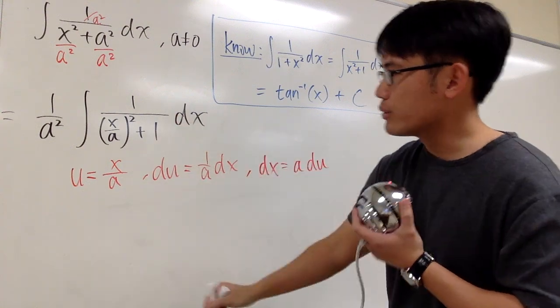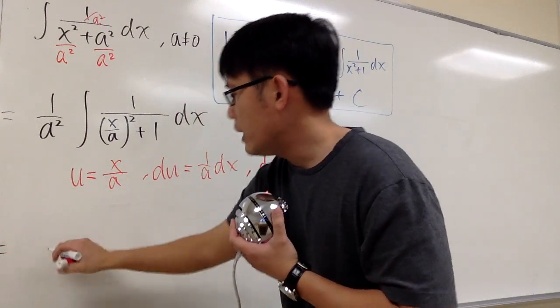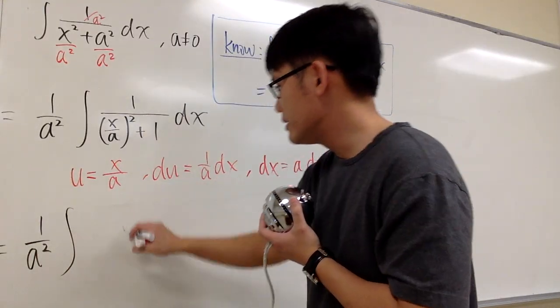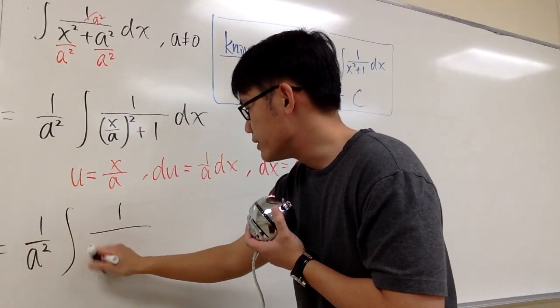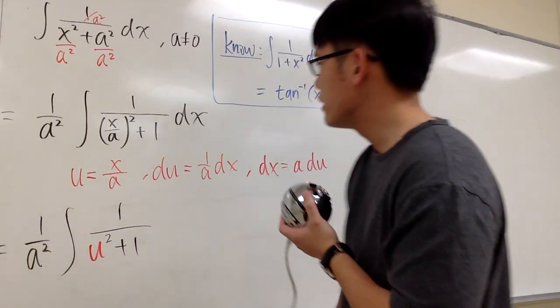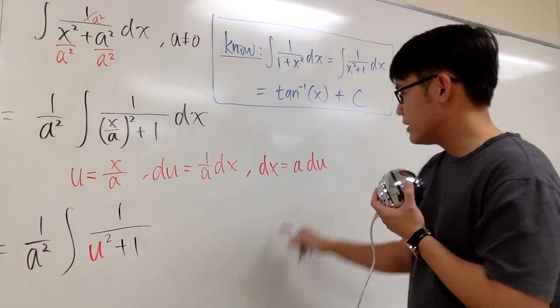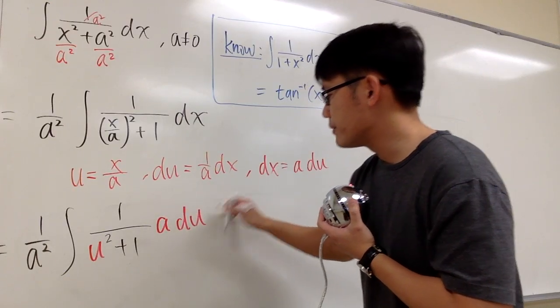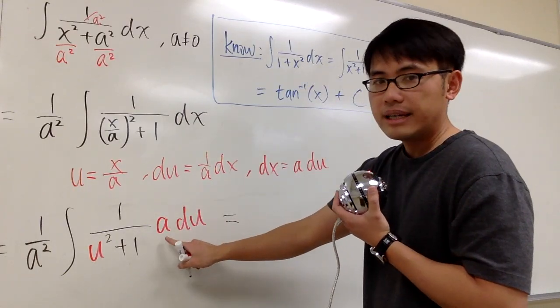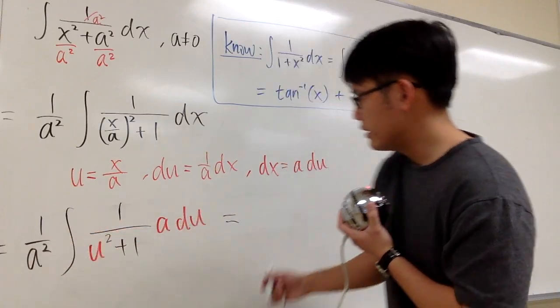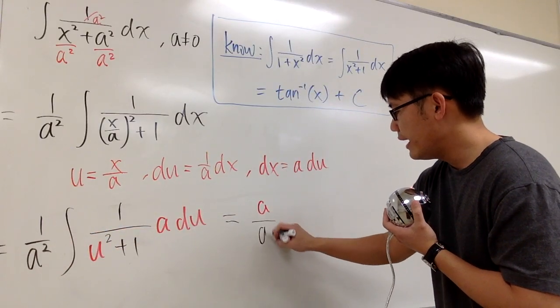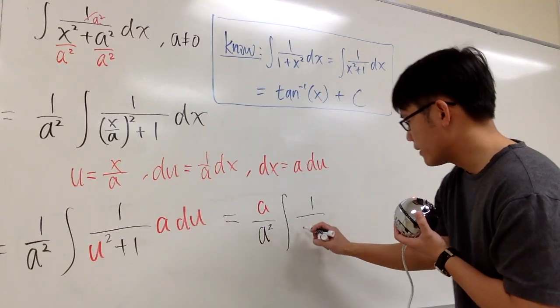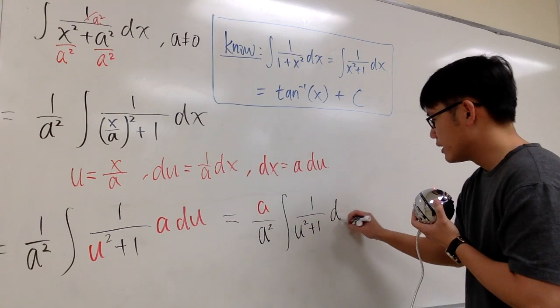And now let's take this into the u world to see what we get. We still have 1 over a squared in the front, and then integral, this is going to be 1 over x over a, which is u, and we have that squared, plus 1. And dx is a times du. So I write down a right here, and then we have du right here. And of course, a is a number. I can take this a to the front. So I'm talking about a over a squared, and then the integral of 1 over u squared plus 1, so u squared plus 1 du.